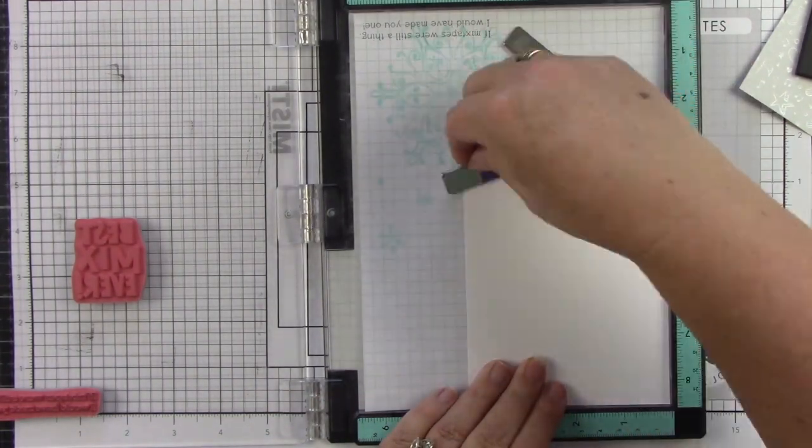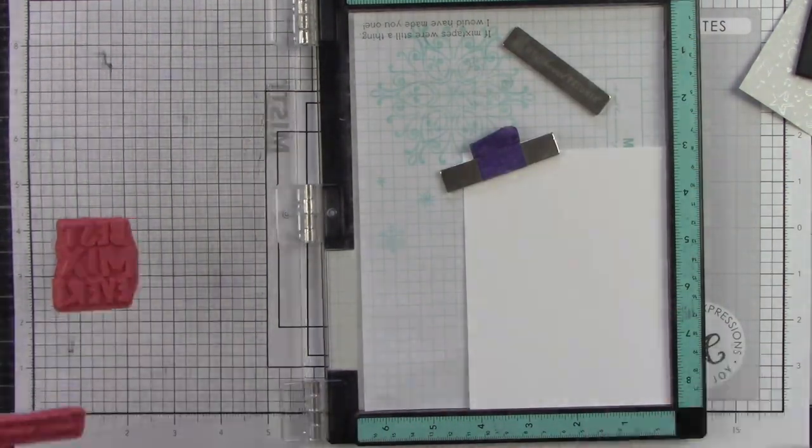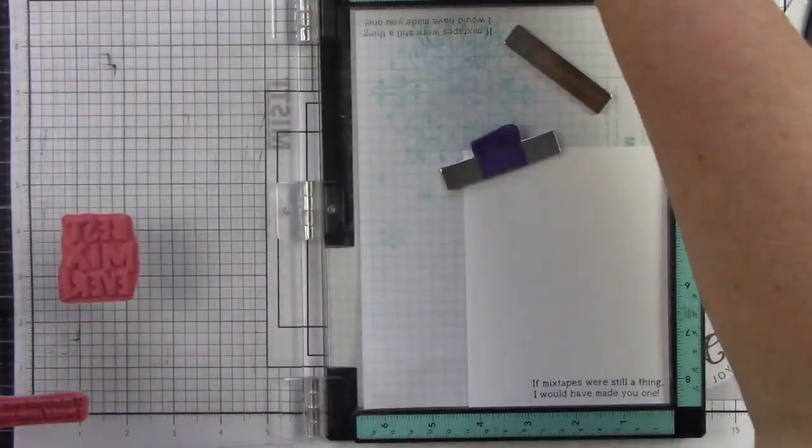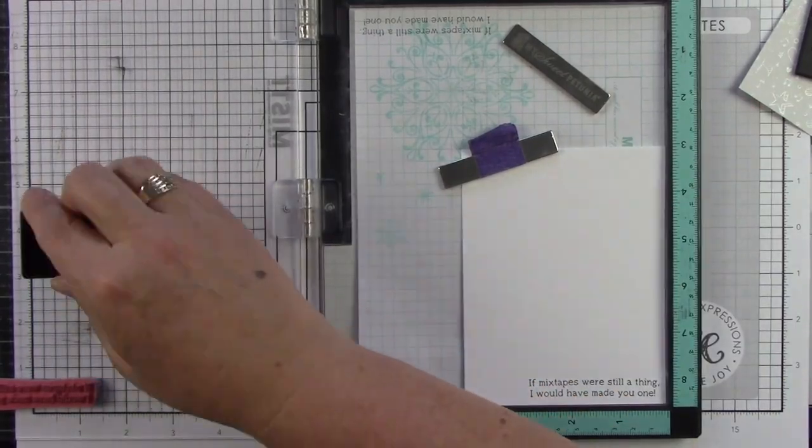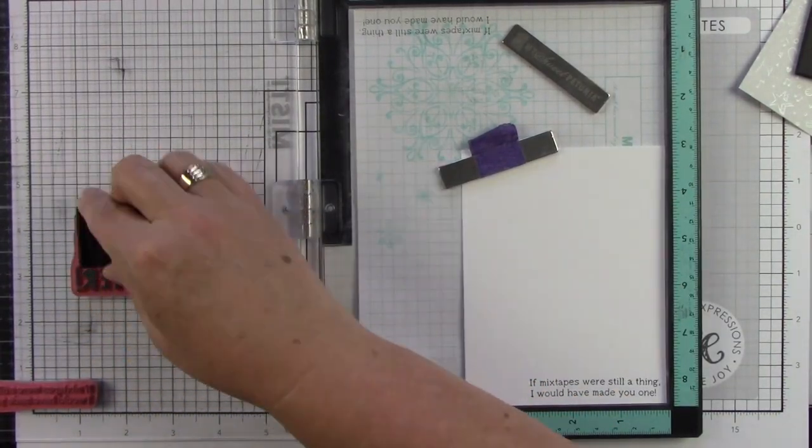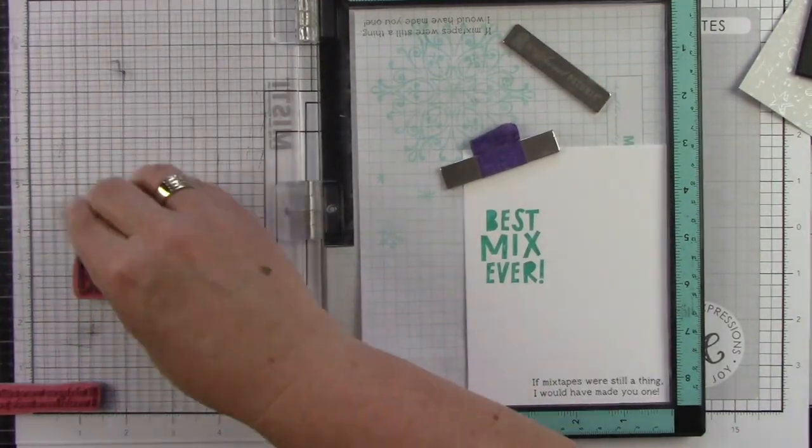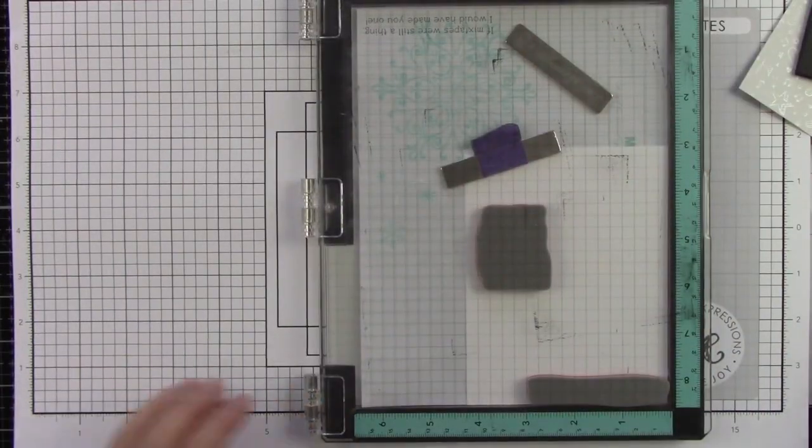I'm going to stamp that one with oreo ink. I took out my piece of cardstock, I'm lining it up on my grid paper from my MISTI to make sure it's nice and straight. I brought my cardstock back in, stamped that up, and then I'm using the blue raspberry on the Best Mix Ever sentiment.